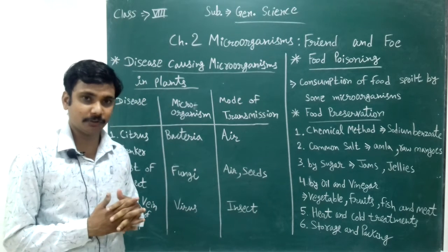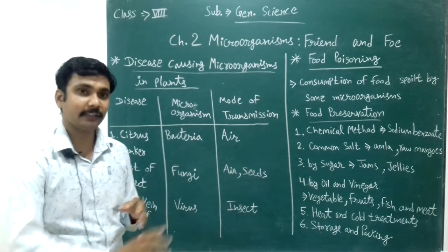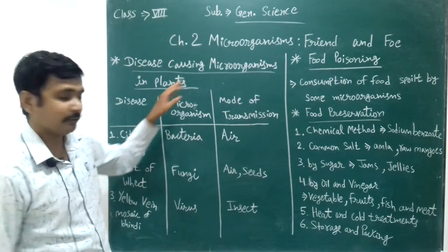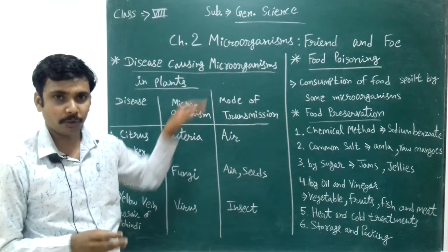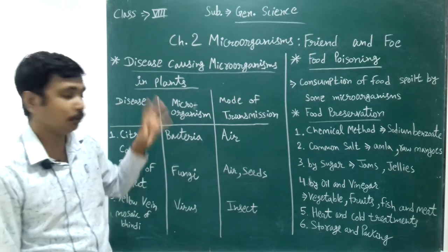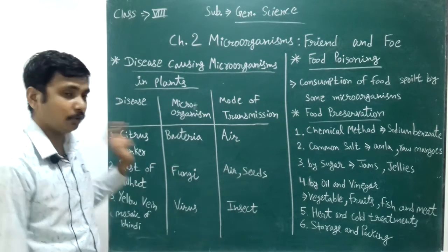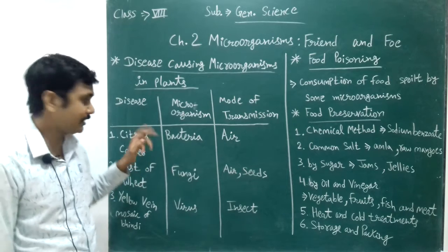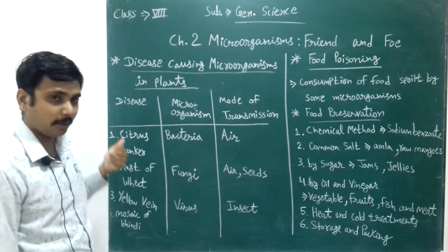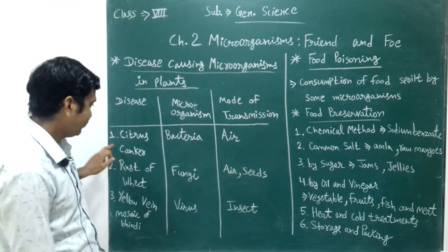Which diseases do microorganisms cause in plants? Several microorganisms also cause diseases in plants. For example, wheat, sugar, orange, apple, etc. For your exam, we have three important points we will discuss. Number one is citrus canker.